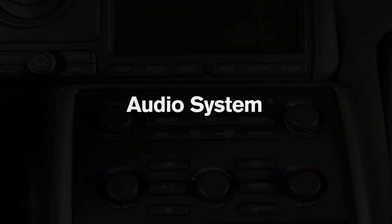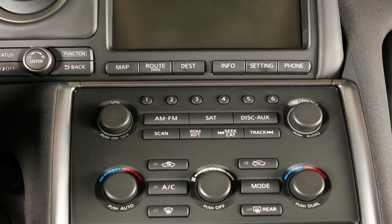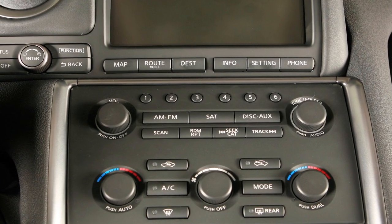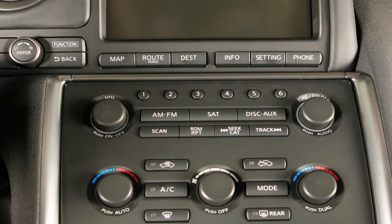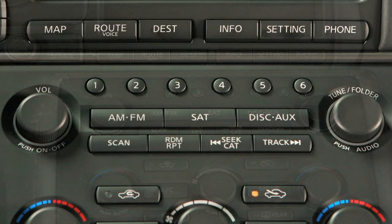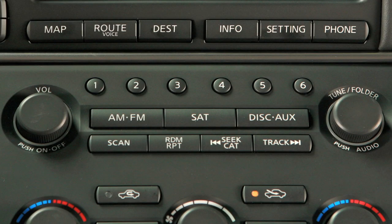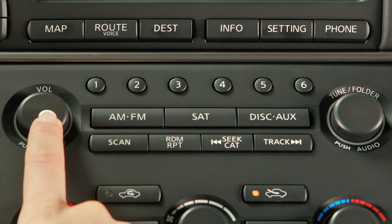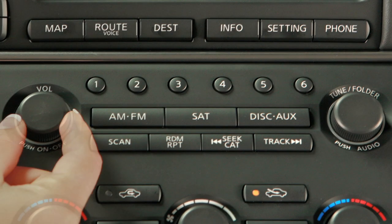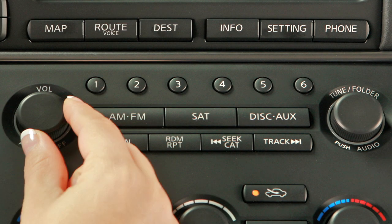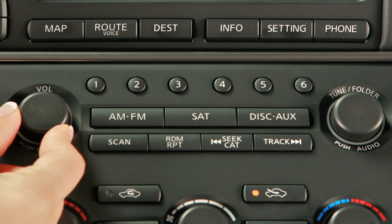Your audio system includes an AM-FM radio and a single-disc CD player. Press the center of the power volume knob to turn your system on. Turn the knob to adjust volume.